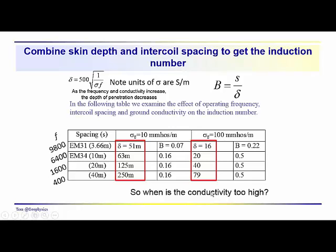So, the question that you might have is, well, we kind of see what low induction number is. When is the induction number too high? If we increase the ground conductivity in the survey area, we're getting higher induction numbers. Are these induction numbers too high? What is too high?